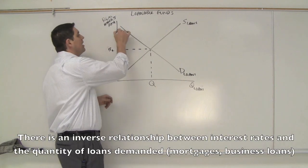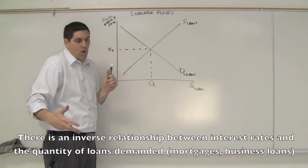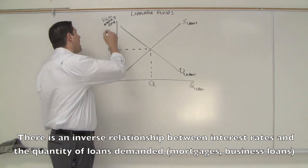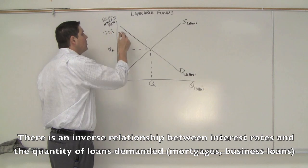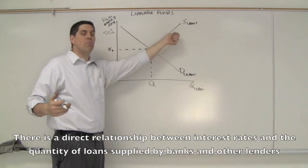If the interest rate is real high, you're not going to demand or take out a loan. Remember, you're the person who demands it. If you want to borrow money, you demand a loan. At a high interest rate, let's say 50%, you're not going to want to borrow money, but the people who want to supply those loans, that would be very high.